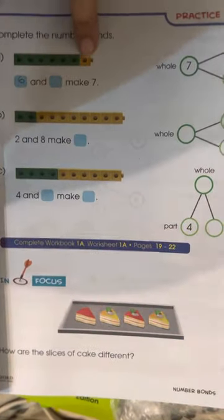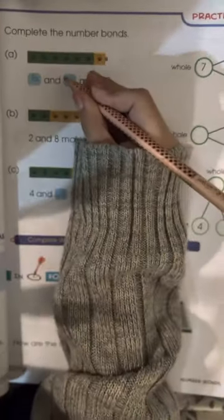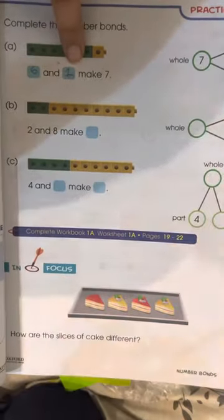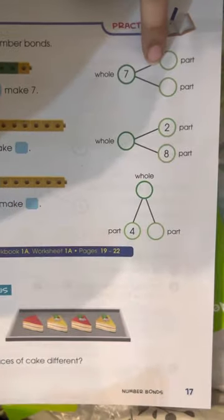Now, how many yellow tiles are there? One. Write one here. So, six plus one? Seven. Okay. Write it here.